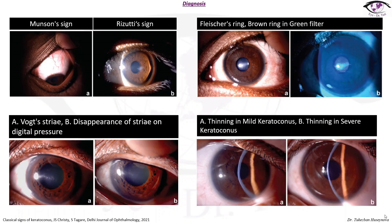Here are a few clinical pictures. We can see Munson sign — a protrusion of the lower eyelid when the patient looks down. Rizzuti's sign is a sharply focused conical beam of light near the nasal limbus. Here we can see a Fleischer ring — brownish iron deposits, really well observed with a green filter. Vogt's striae are vertical stress lines at the level of posterior stroma and may disappear on gentle pressure on the globe, as seen in image B.